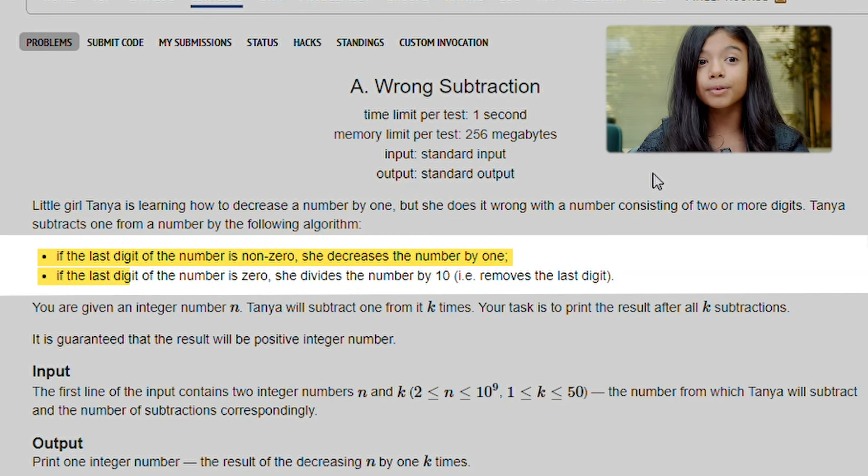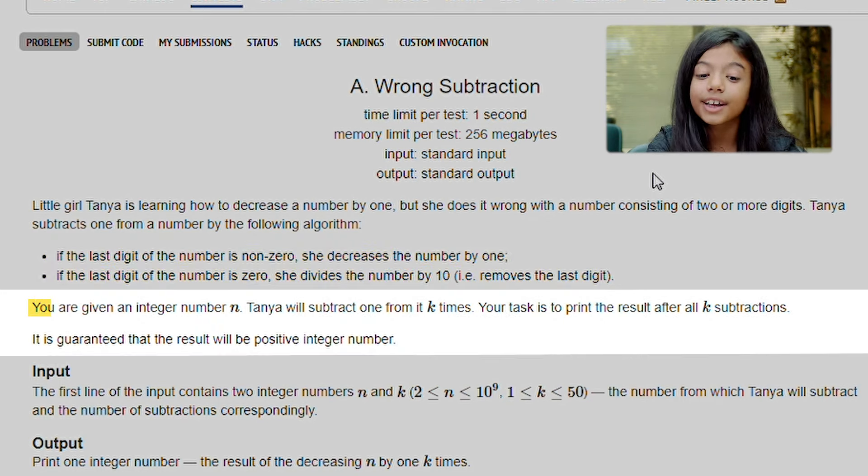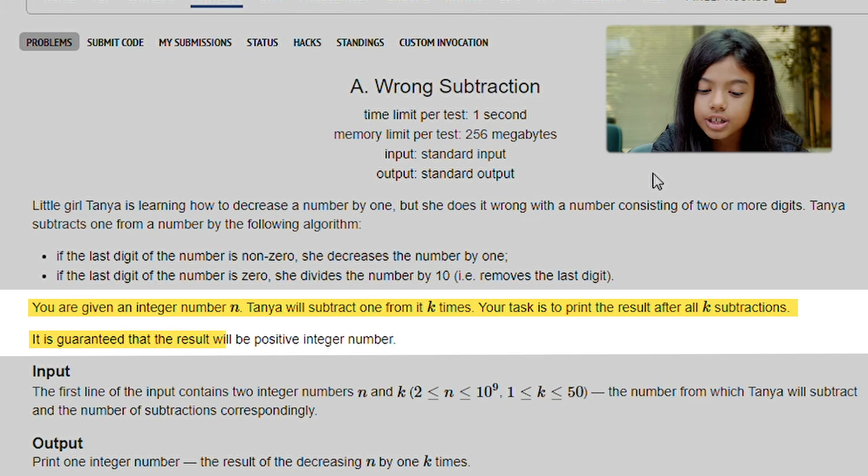If the last digit of the number is zero, she divides the number by ten, which means the last digit. You are given an integer number n. Tanya will subtract one from it k times. Your task is to print the result after all k subtracts. It is guaranteed that the result will be positive integer number.